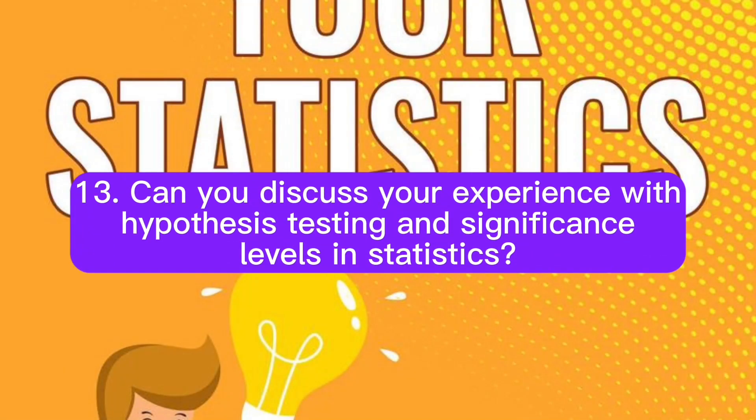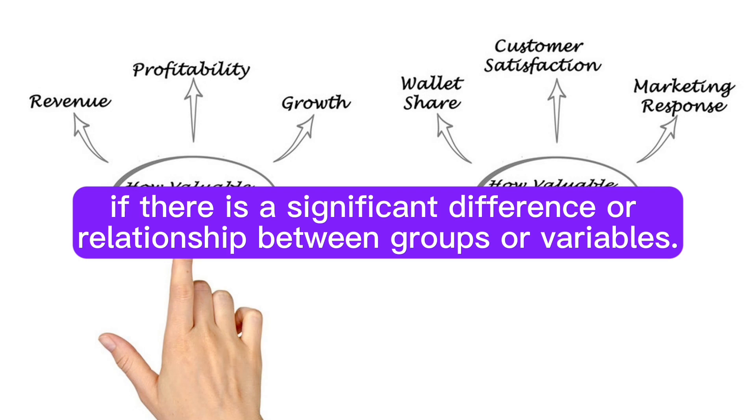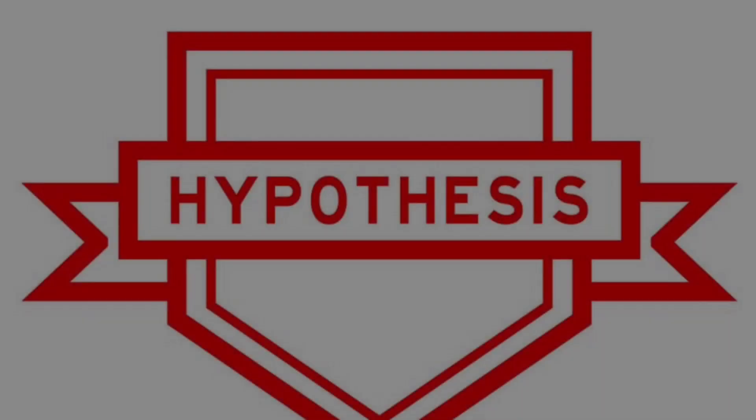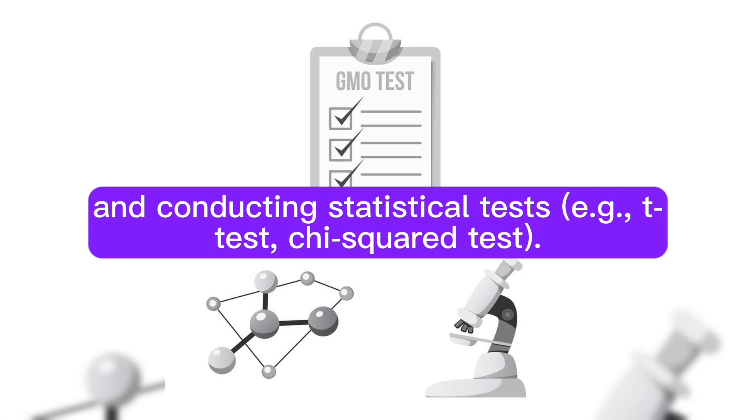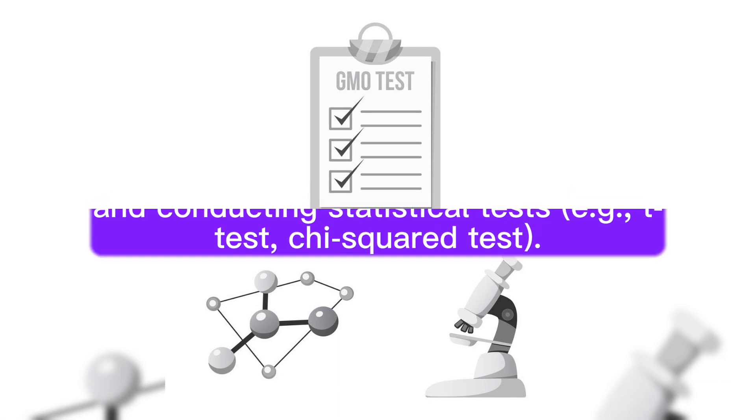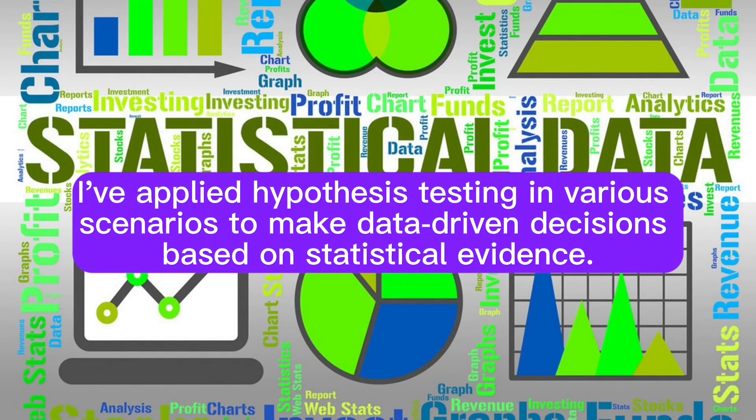Question 13: Can you discuss your experience with hypothesis testing and significance levels in statistics? Answer: Hypothesis testing is a statistical method used to determine if there is a significant difference or relationship between groups or variables. It involves formulating null and alternative hypotheses, selecting a significance level, and conducting statistical tests, for example T-test or chi-squared test. The significance level represents the probability of making a type I error, rejecting a true null hypothesis. I've applied hypothesis testing in various scenarios to make data-driven decisions based on statistical evidence.